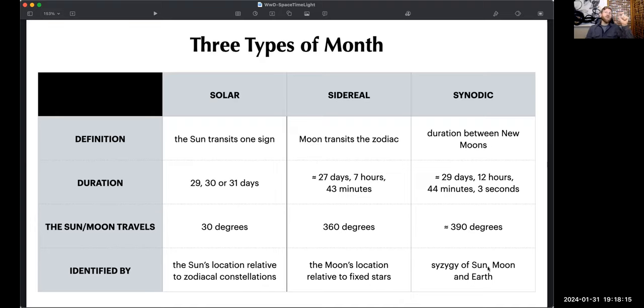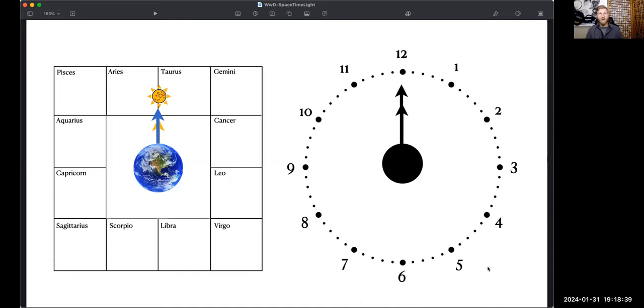And we can measure that between new moons or full moons. It doesn't really matter. I like doing it with new moons. But any form of syzygy to get the sun, moon, and earth in one line to go all the way around takes 29 and a half days. So those are three types of months. We can choose how to measure them. And the Gregorian calendar measures none of them. So take that for what you will.